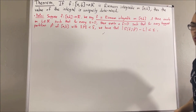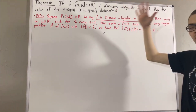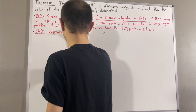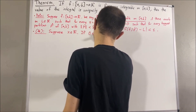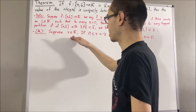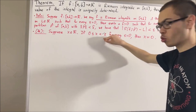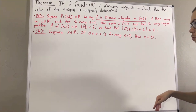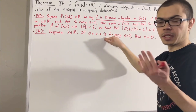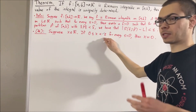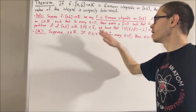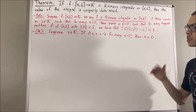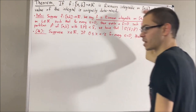In proving this theorem, we're going to use the following preliminary result: suppose x is a real number; if the inequality |x| < ε is true for every ε > 0, then x is equal to 0. So if we know this is true for ε = 0.1, for ε = 0.0001, for every positive real number, then x must equal 0. Now let's get into proving the theorem.